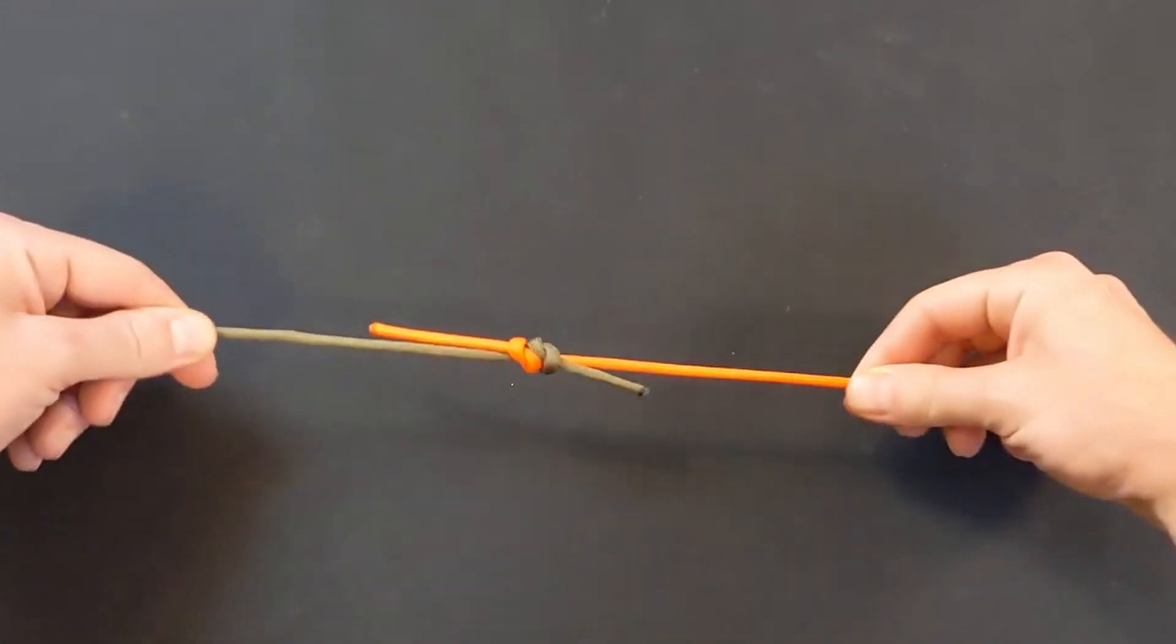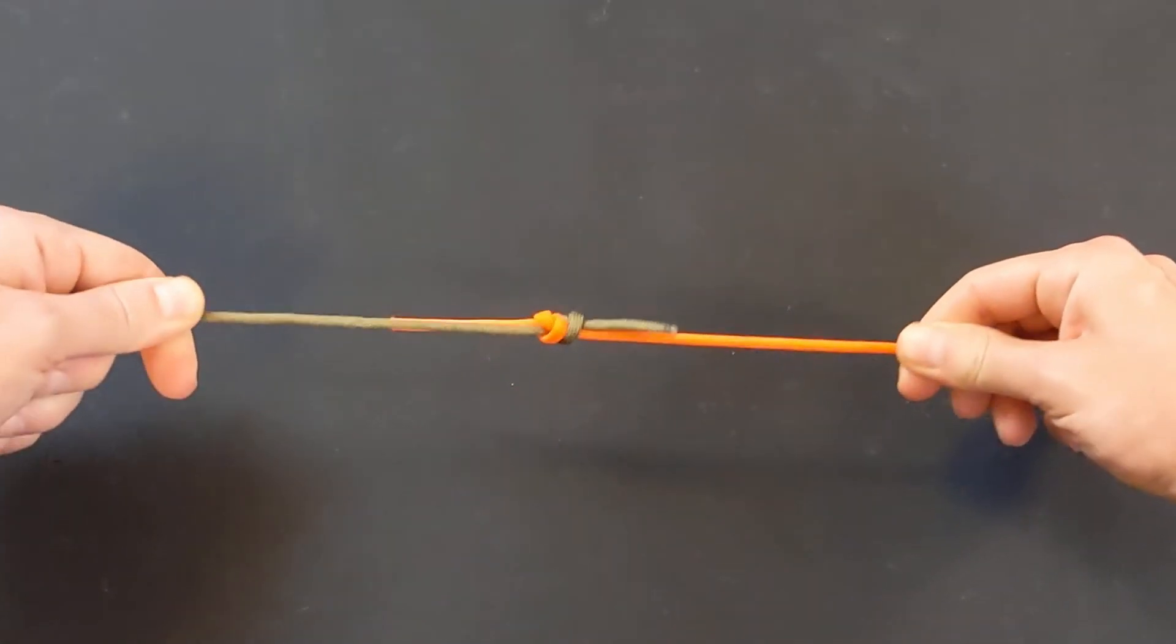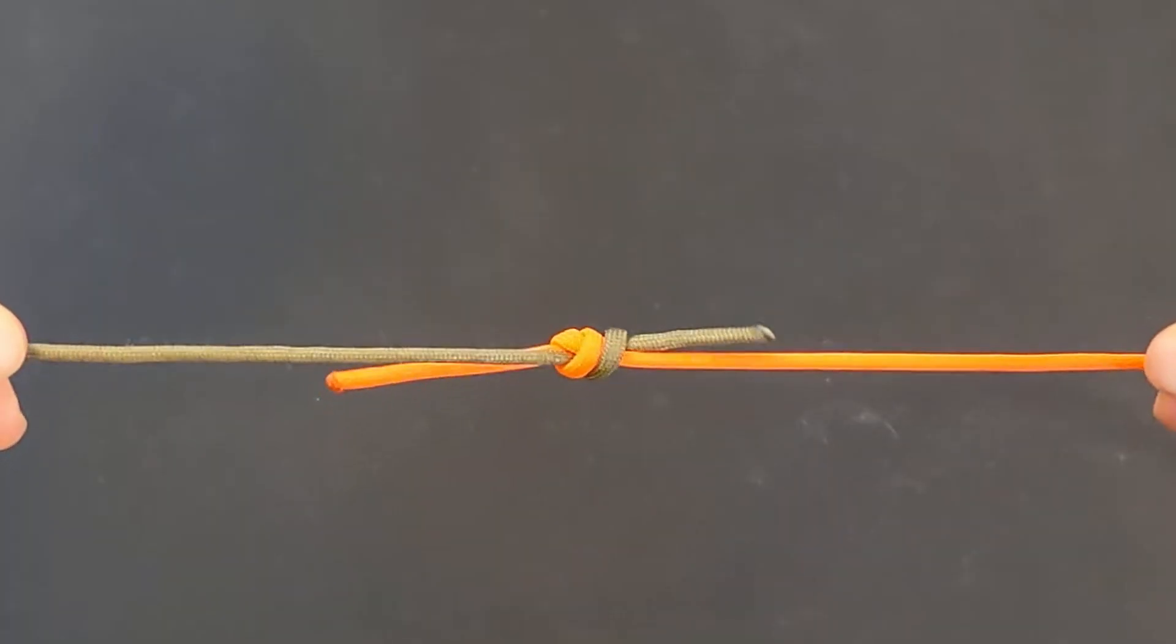Tighten both overhand knots and pull the lines in opposite directions. The two knots will cinch up against each other and the Fisherman's Bend is complete.